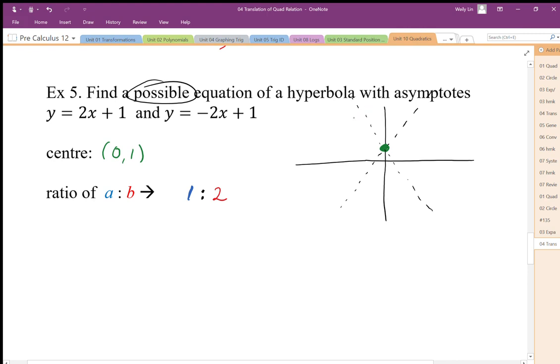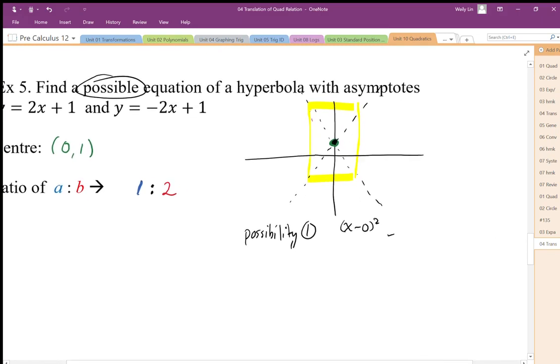So we have this situation here that we don't know. So I could just kind of draw in my rectangular box. We don't know if this is even transverse x or y. So a possible equation would be this. We'll call this possibility 1. It could be (x - 0)² and (y - 1)². And the a and b values could just be 2 and 1. So we could go 1 and 4. So 1² and 2². And we could just make it equal to 1.